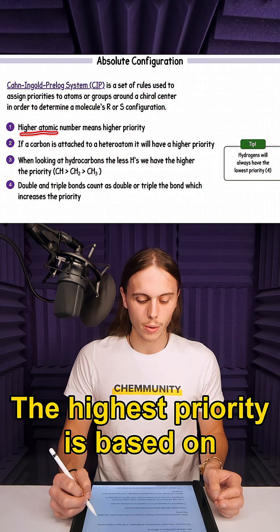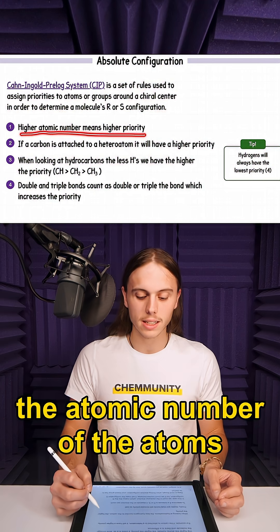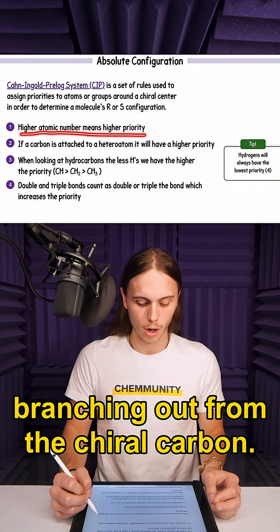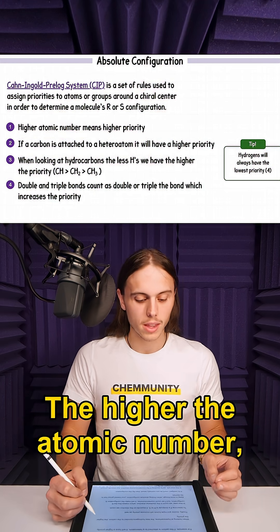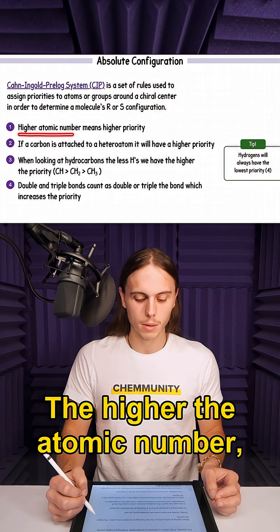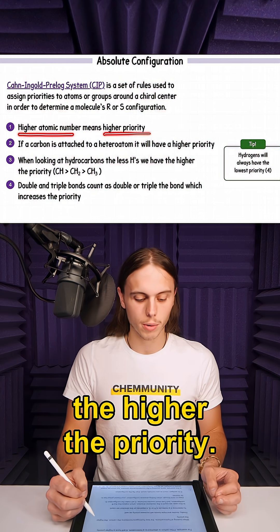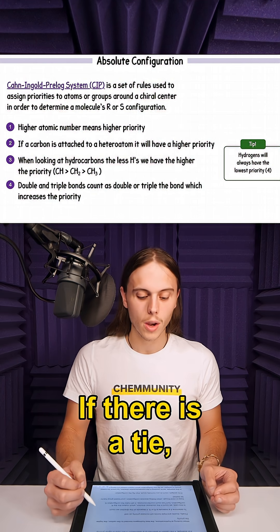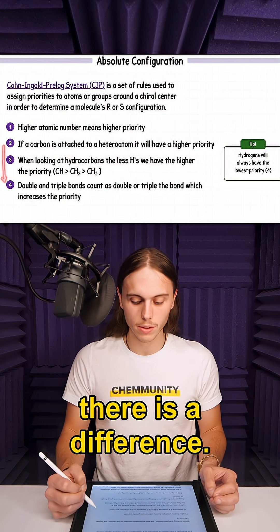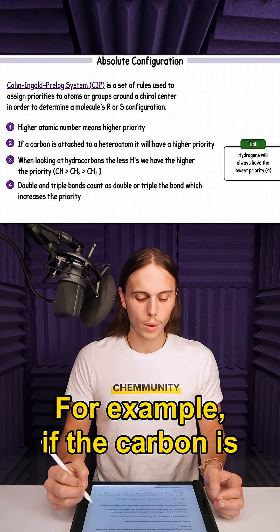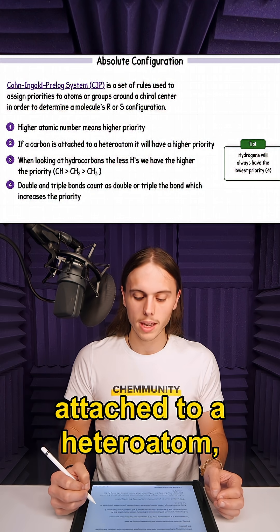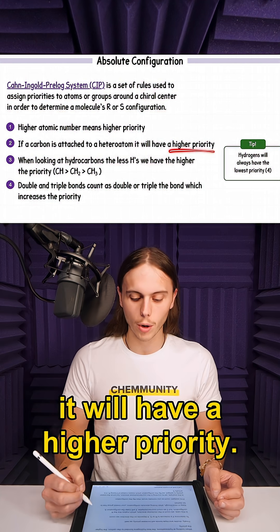The highest priority is based on the atomic number of the atoms branching out from the chiral carbon. The higher the atomic number, the higher the priority. If there is a tie, work through the molecule until there is a difference. For example, if the carbon is attached to a heteroatom, it will have a higher priority.